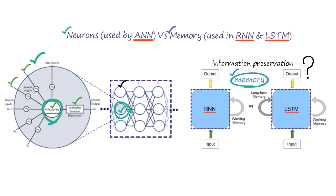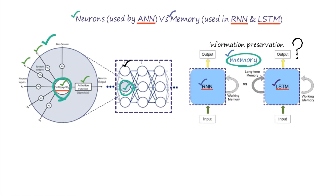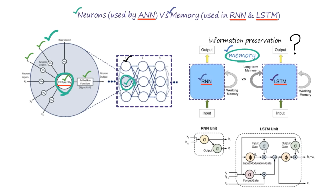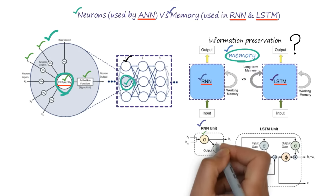Now we will focus on more details — how the RNN and LSTM cells internally look like. In an RNN memory cell, we have two gates: one is the input gate and another one is the output gate.